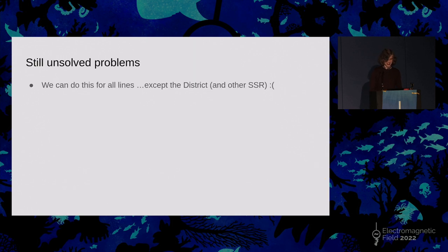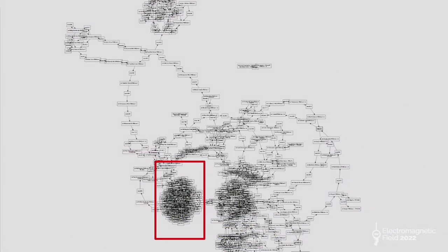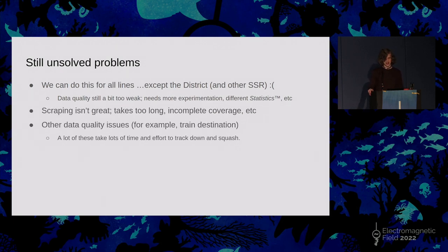But it's not all roses. The district line is still an ongoing issue. We can do this for all lines except the district and other subsurface lines, but the district is really quite bad. If we try and run our new funky algorithm through that, we get a bit of an ugly mess. This is not very usable. It probably can be fixed eventually. I just need to do a bunch more thinking. But it's more work that I haven't gotten around to yet. Talking of stuff that is more work that I haven't gotten around to yet. The scraping stuff is kind of not great. It would be nice to be able to poll a bit more frequently than 11 seconds, but I have to do a whole bunch of other stuff to enable that. And there are a whole bunch of other data quality issues, like the train destination that's shown on the website often flaps back and forth, which isn't great. It's just a lot of time and effort to track these down and squash them. I have a day job. This is not what I do full time. I don't necessarily always have time and effort.